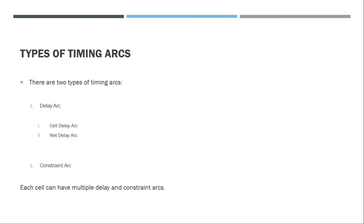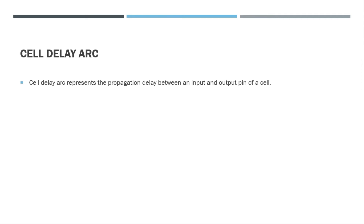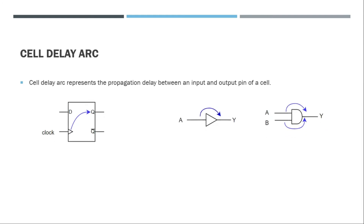Each cell can have multiple delay and constraint arcs. The cell delay arc represents the propagation delay between an input and output pin of a cell, and is defined for multiple pins when there are multiple inputs. For a D flip-flop, the cell delay arc goes from the clock to the output Q. For a buffer, it's the propagation delay from input A to output Y. For an AND gate, there are two delay arcs: pin A to Y and pin B to Y.